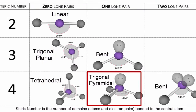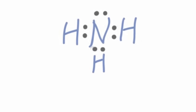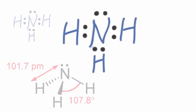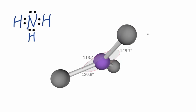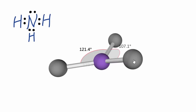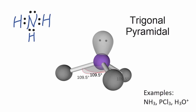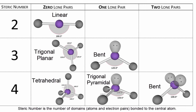For the trigonal pyramidal, we have a steric number of four — that's three atoms and one lone pair attached to that central atom. NH3, ammonia, is a good example. We have that central nitrogen with three atoms attached and then the lone pair, and you can imagine those hydrogens will spread out, but that lone pair is going to push them down to give it the trigonal pyramidal molecular geometry. We add our three atoms — they all spread out — and then we add our lone pair, which pushes them down to give us this trigonal pyramidal molecular geometry.